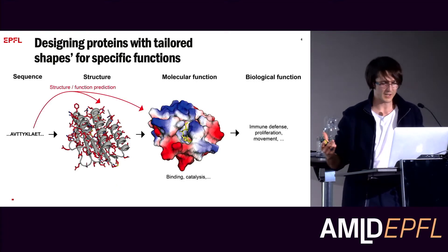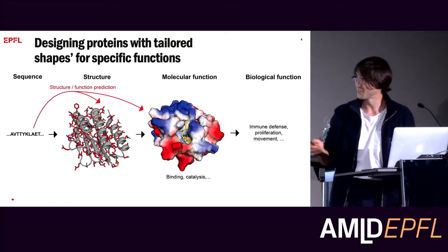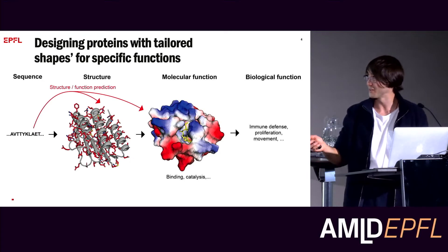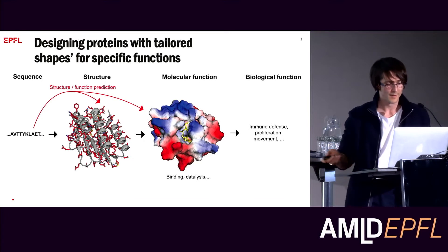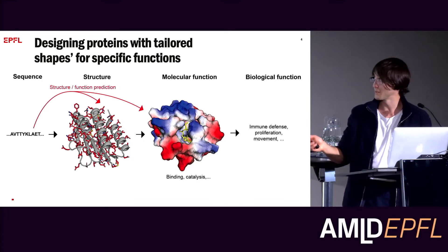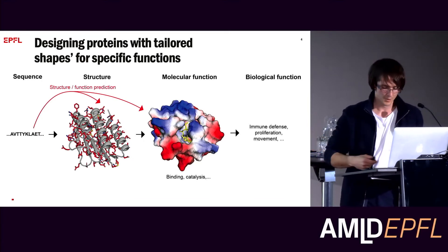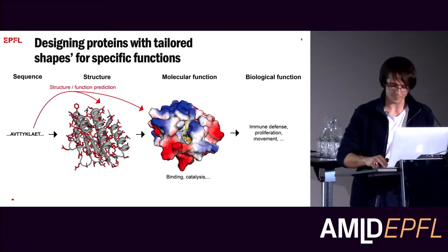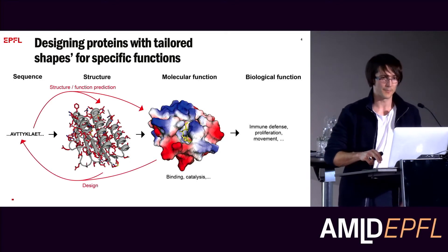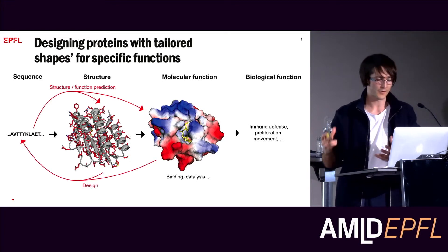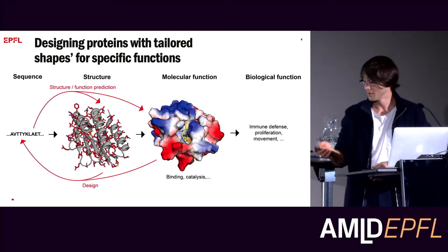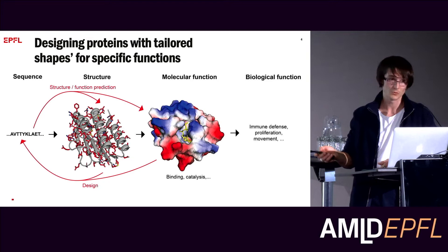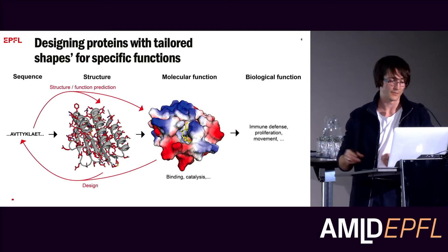From a computational point of view, you can start from the sequence and try to predict what the structure is — that is what AlphaFold does right now, state of the art. You can also try to predict what the function is. But as a protein designer, I'm more interested in: I have a function and I would like to design a sequence that will give rise to a specific structure or a function.